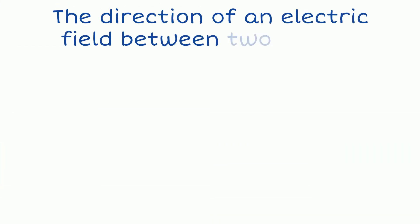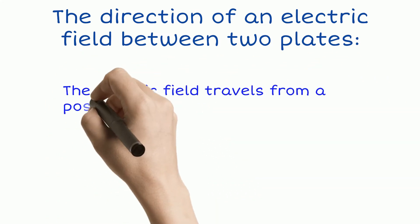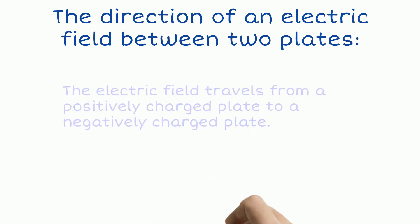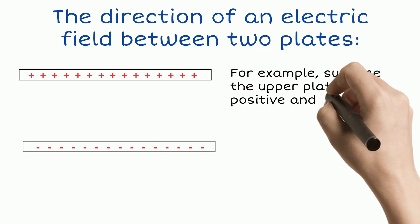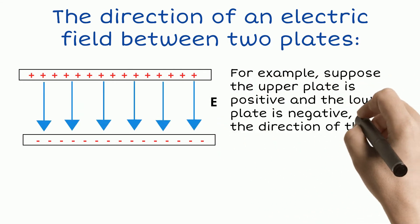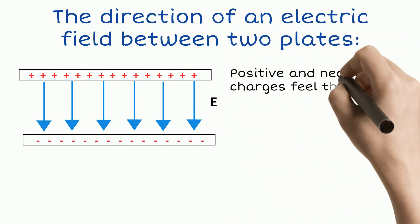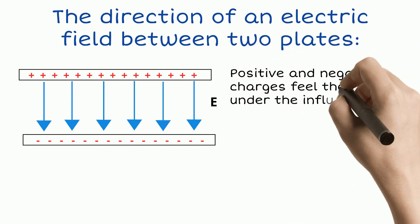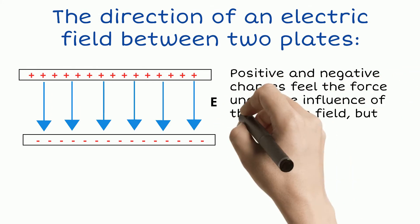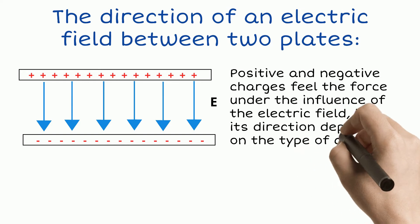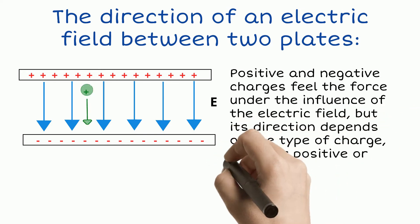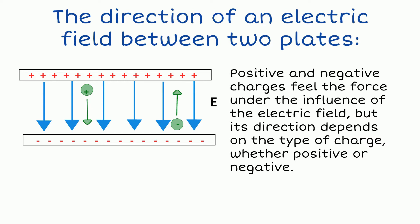Now let's see the direction of an electric field between two plates. The electric field travels from a positively charged plate to a negatively charged plate. For example, suppose the upper plate is positive and lower plate is negative — then the direction of the electric field is as shown in the figure. Positive charge senses force in the direction of the electric field, whereas negative charge feels force in the opposite direction.